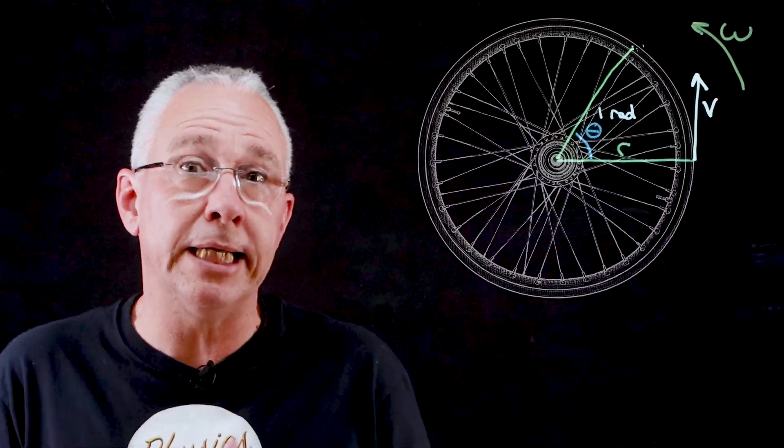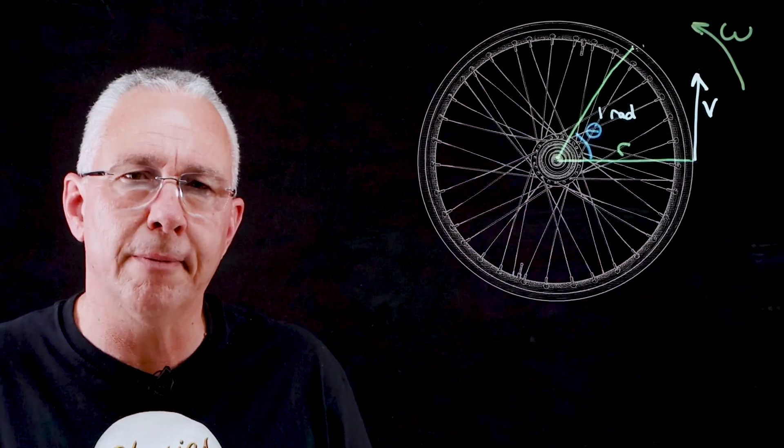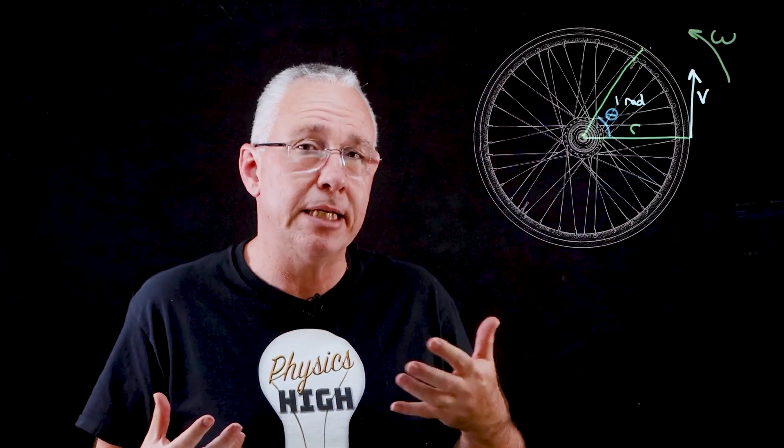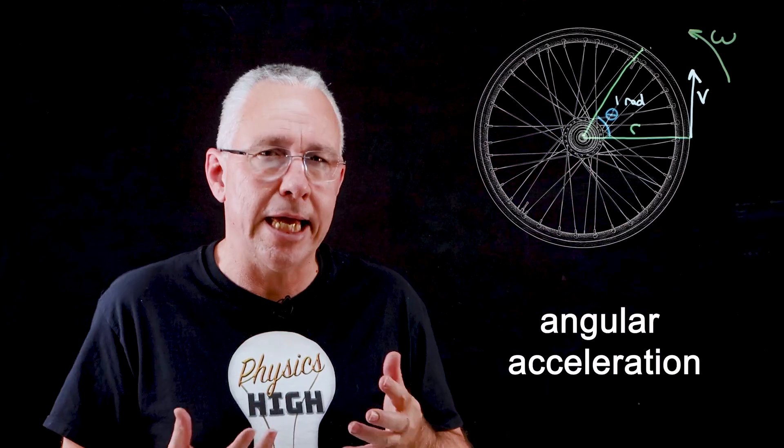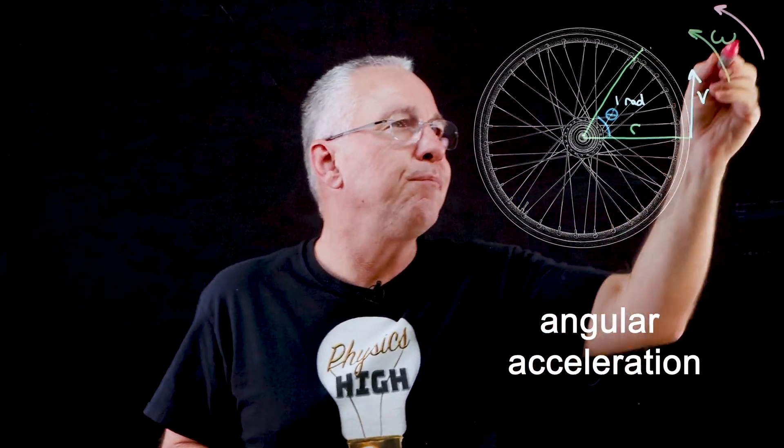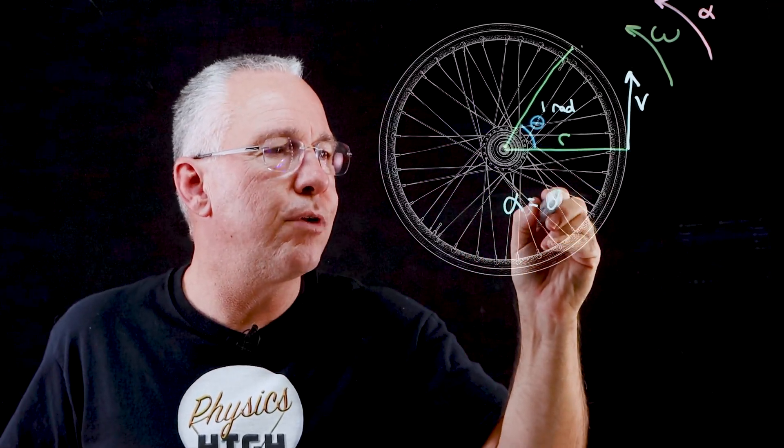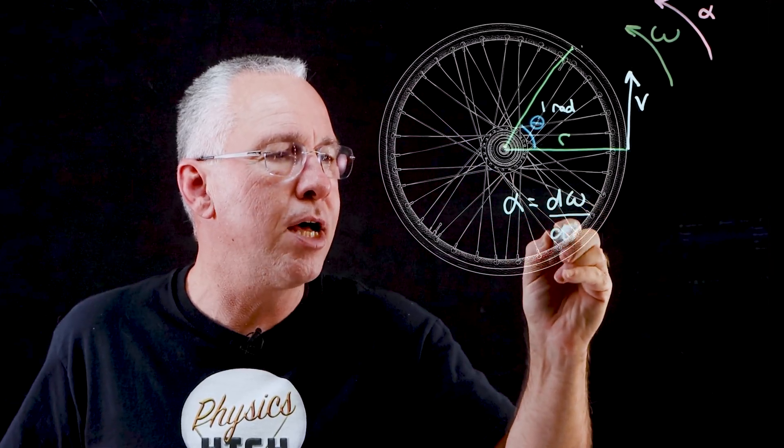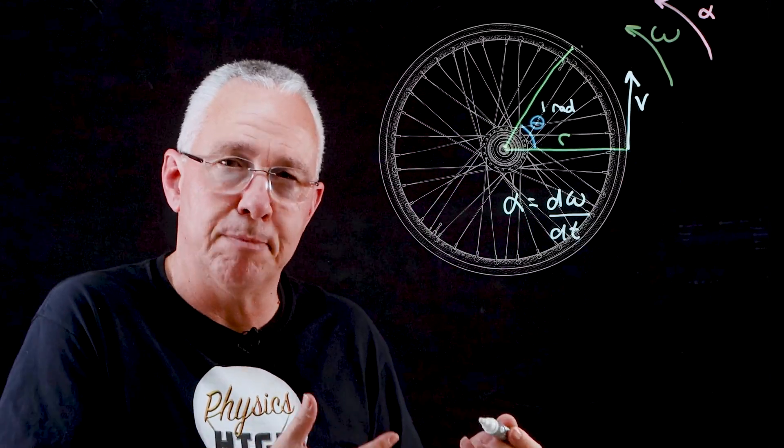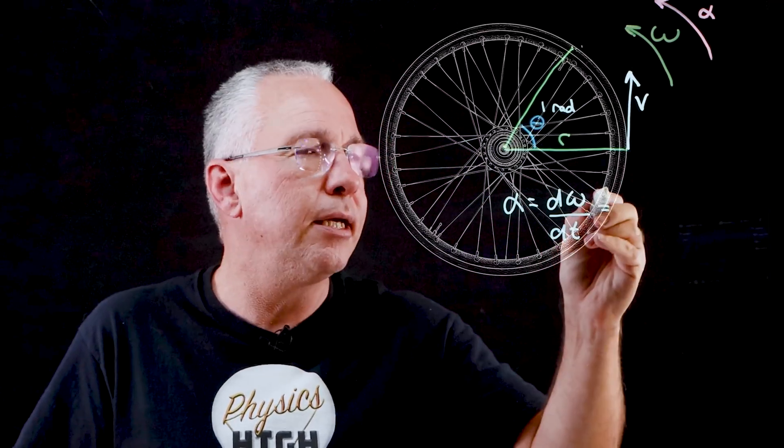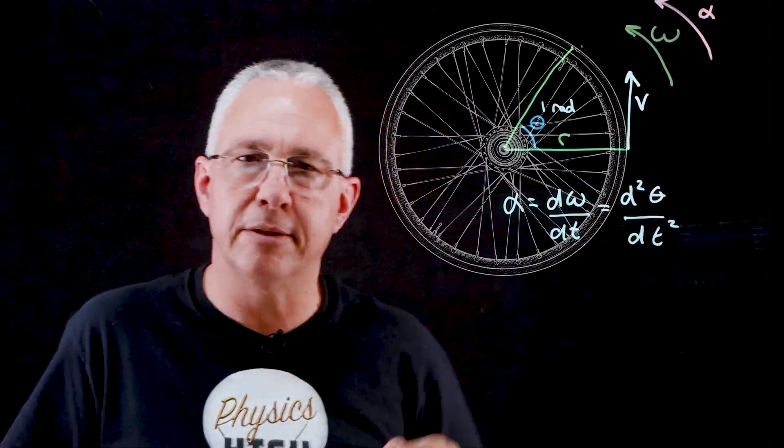But what if this rotation was speeding up? In other words, the angular velocity increases at a constant rate with respect to time. Well, just like linear velocity changing means we have an acceleration, so too we have an acceleration in rotational motion. And this is, of course, referred to as the angular acceleration. Now, the symbol we use here is the Greek letter alpha. And so what we end up getting is that α is equal to the rate of change of angular velocity with respect to time. And because the angular velocity is the derivative of the angular displacement with respect to time, that means that the angular acceleration is the second derivative of the angular displacement with respect to time.